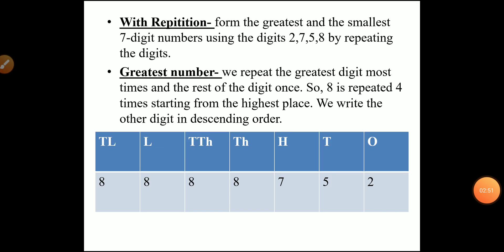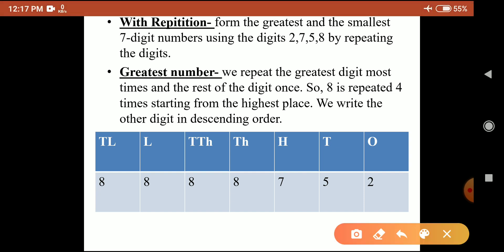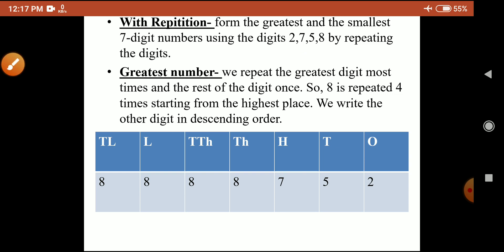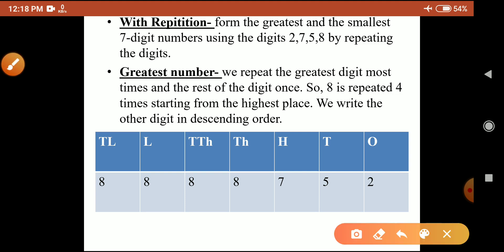Now we come to the second method: with repetition of digits. We again form the greatest and smallest seven-digit numbers, this time using the digits 2, 7, 5, and 8, repeating digits as needed. For the greatest number, we repeat the greatest digit the most number of times and use the rest of the digits only once. The greatest digit here is 8.